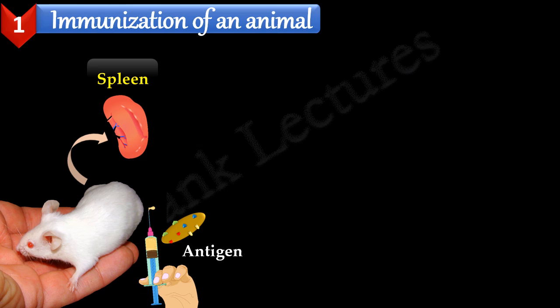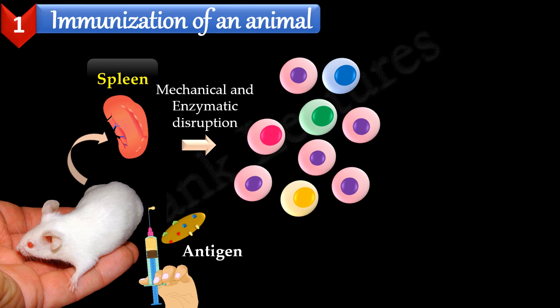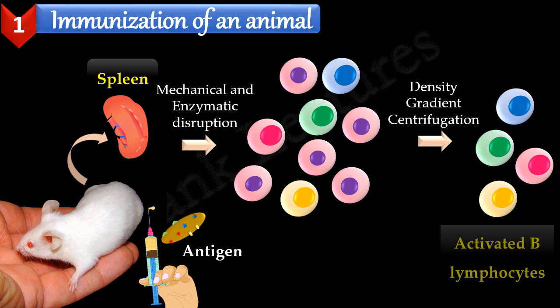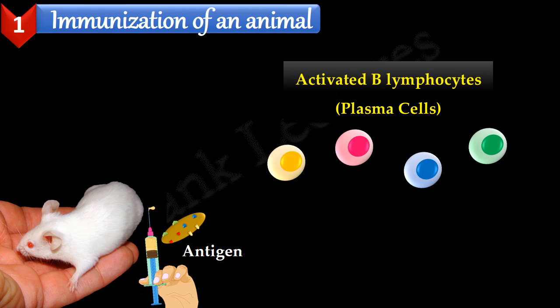The spleen is then subjected to mechanical or enzymatic disruption, which results in the release of cells. Activated B cells or plasma cells are separated from the normal spleen B cells by density gradient centrifugation. So at the end of this step, we have activated B cells which are capable of producing antibodies against the specific epitopes present on the antigen.